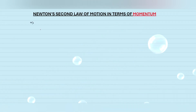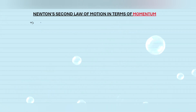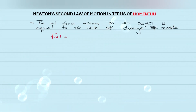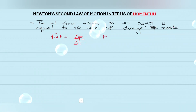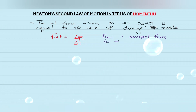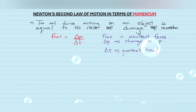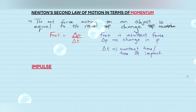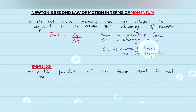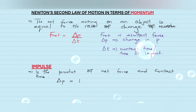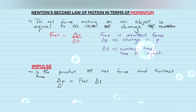Newton's second law of motion in terms of momentum states that the net force acting on an object is equal to the rate of change of momentum. This means Fnet is equal to delta p over delta t, where Fnet represents the resultant force, delta p represents change in momentum, and delta t represents the contact time or time of impact. Impulse is the product of net force and contact time, so delta p equals Fnet multiplied by delta t.